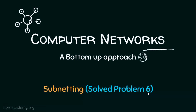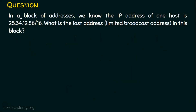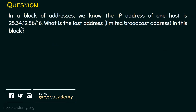Let's solve problem number six in subnetting. In a block of addresses, we know the IP address of one host is 25.34.12.56 and the subnet mask is represented in slash notation, which is slash 16.